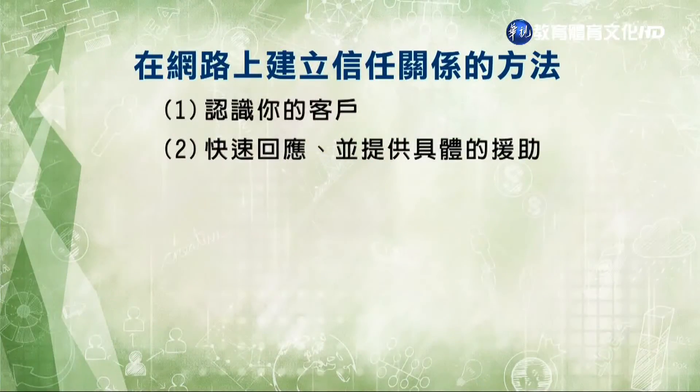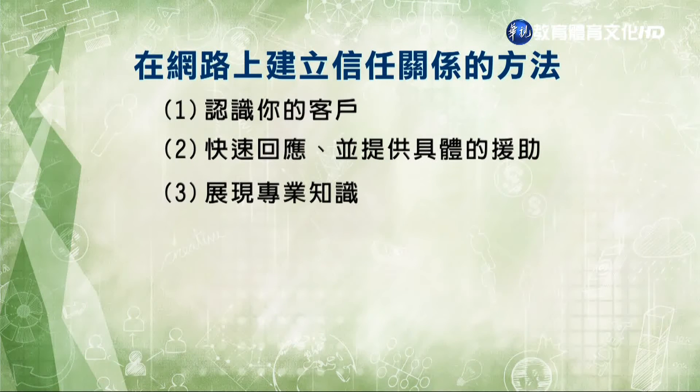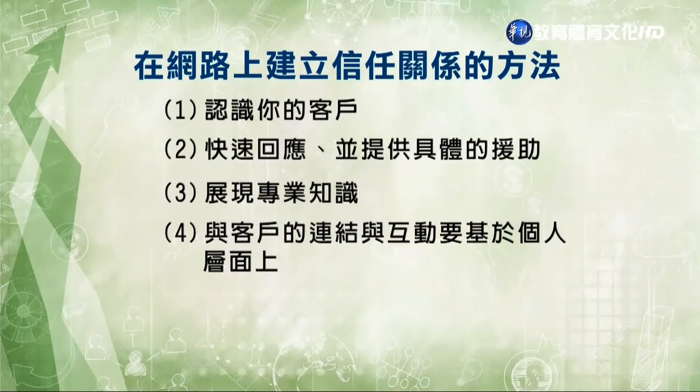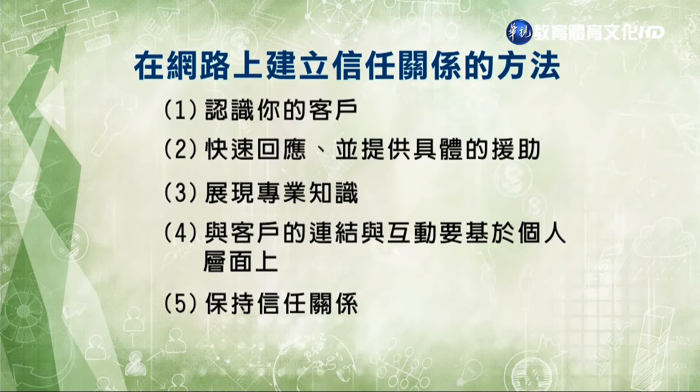關於這一點，可以嘗試下面五種方法在網路上建立與客戶的信任關係。第一個是認識你的顧客，回應顧客的時候要使用適合他們的稱謂，比方說先生、太太、小姐、博士、教授等等。第二個是快速回應並提供具體援助，顧客使用網路是要節省時間，所以一定要很快且具體有效地提供解決方案。第三個是展現專業知識，展現自己對問題的專業性，可以增加產品或公司的附加價值。第四個是跟客戶的連結跟互動要基於個人層面，在部落格或LINE上放上你的照片，讓客戶知道他們是來跟誰聯繫，加深印象跟信任。第五點是保持信任的關係。